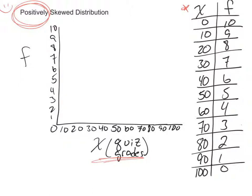So again, positively skewed distribution. We had no one get a score of 100, but we had one person get a score of 90. We had two people get a score of 80, so it kind of climbs a little bit. Then we had three people get a 70, four people get a 60, and then five people get a 50.